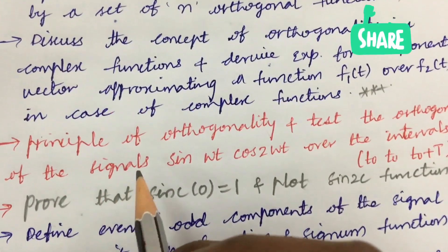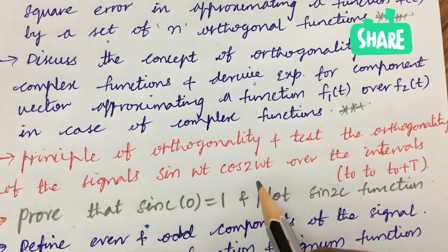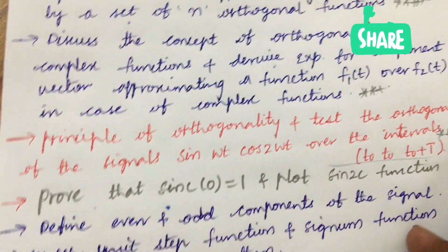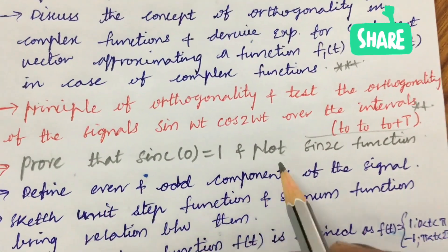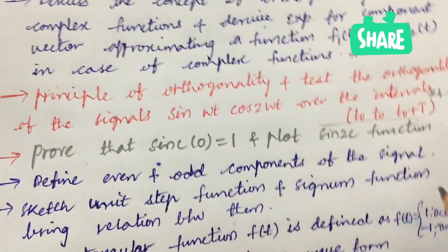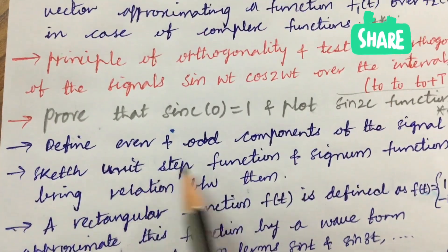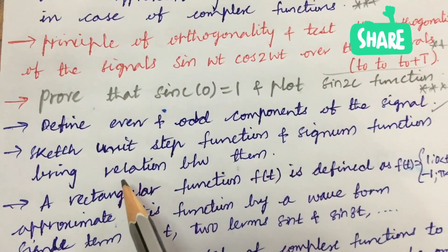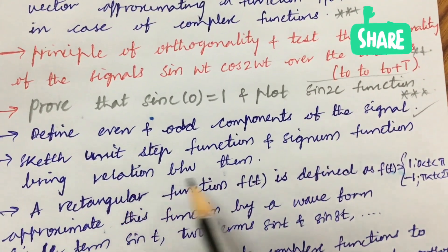Later the principle of orthogonality and test the orthogonal of signals sin(wt) cos(2wt) over the intervals given here. Make sure to work out all these concepts prove that sinc(0) is 1 and plot sinc function is also one of the very very important question. Later derive even and odd components of the signal may be a 7 mark and later sketch unit step function and signum function now bring relation between them.